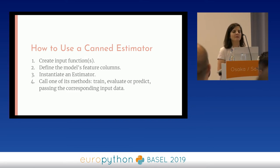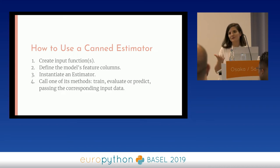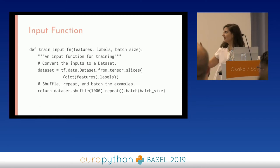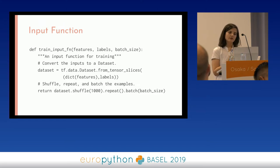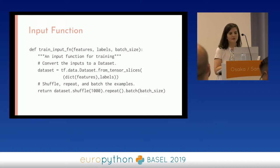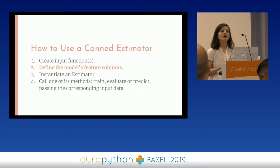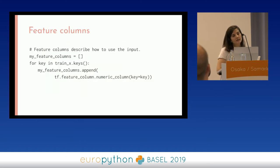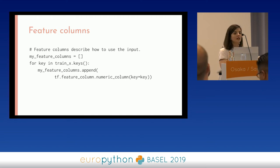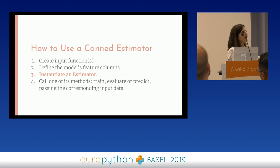We have found that canned estimators are our thing. We want to use them because we're not going to do anything very fancy. How are we going to do this? First, we need to create an input function, define the model feature columns, instantiate the estimator, and then call the train, test, and evaluate methods. We need to tell the model which kind of data this is — is it a string, is it a float? We simply tell it this feature column is actually a numeric column. I'm going through all the train keys and telling my model all these are numeric columns.